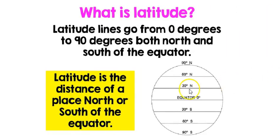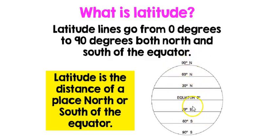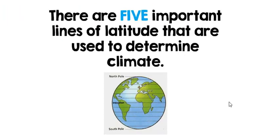What is latitude? Basically, latitude is the distance of a place north or south of the equator. What you see here are lines of latitude — 30 degrees south, the equator, 30 degrees north, 60 degrees north, 90 degrees north of the equator. There are five important lines of latitude you want to memorize because they're used to determine climate and climate zones.